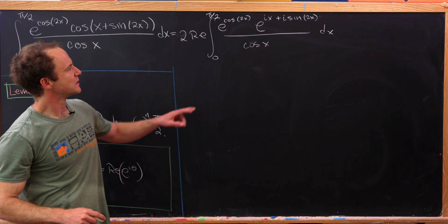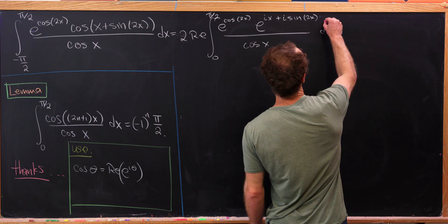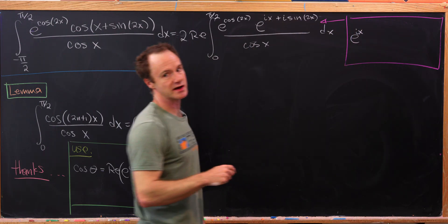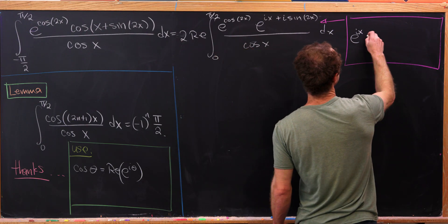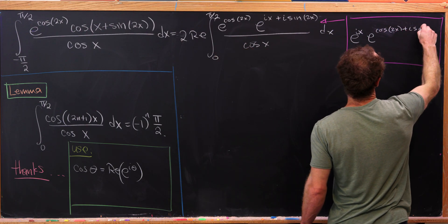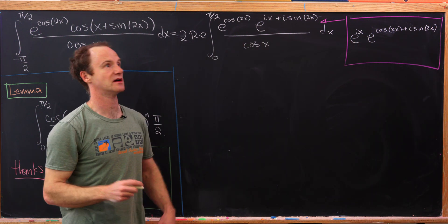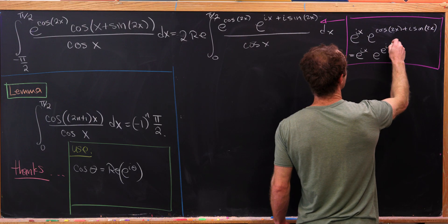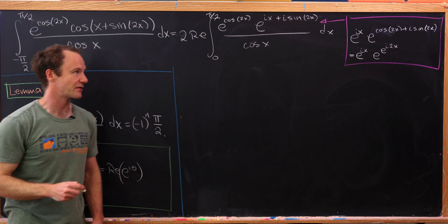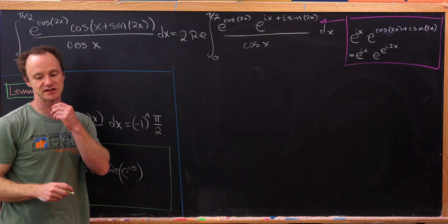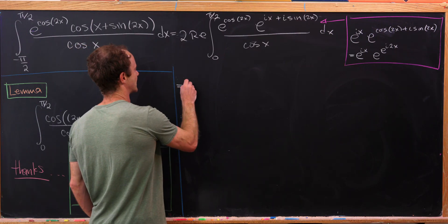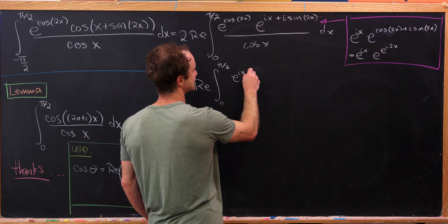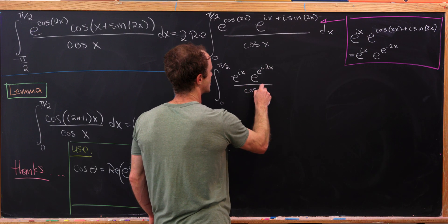We break up the numerator: combining e to the ix with the exponent, we recognize that cosine 2x plus i times sine 2x in the exponent is e to the i·2x by Euler's formula. So the integrand becomes e to the ix times e to the e to the i·2x. What's remarkable is we have a repeated exponentiation built into the solution.